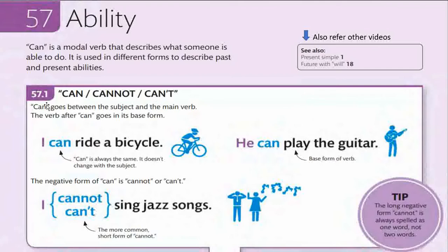The negative form of 'can' is 'cannot,' and the contraction of 'cannot' is 'can't.' 'Can' goes between the subject and the main verb. For example: 'I walk' — 'I' is the subject, 'walk' is the main verb — becomes 'I cannot walk.' The verb after 'can' goes in the base form, meaning the original form without any inflection like -ing, -ed, or -s added to it.